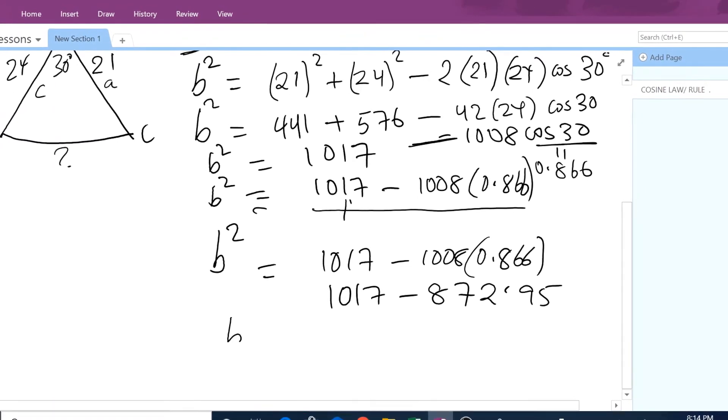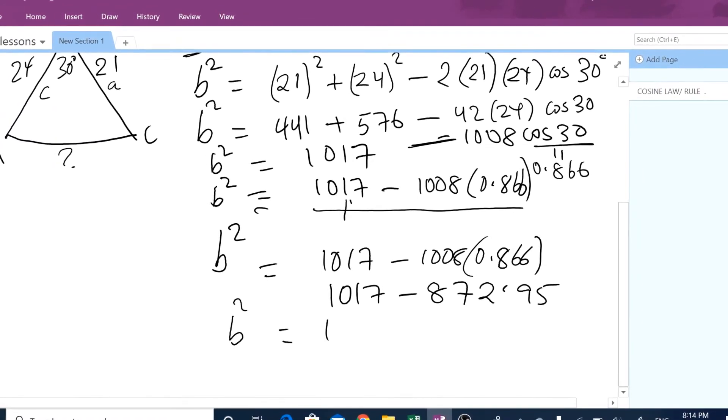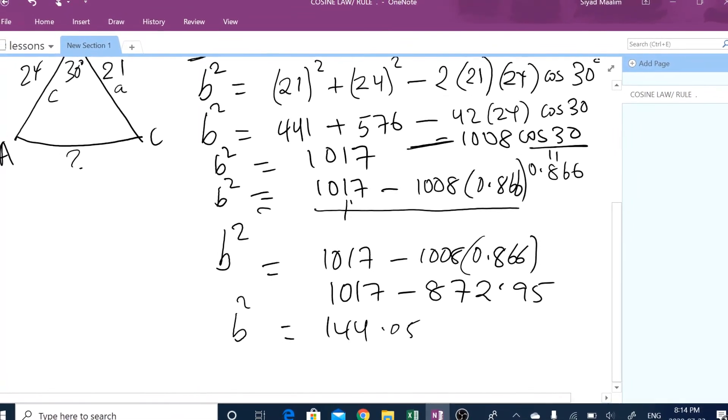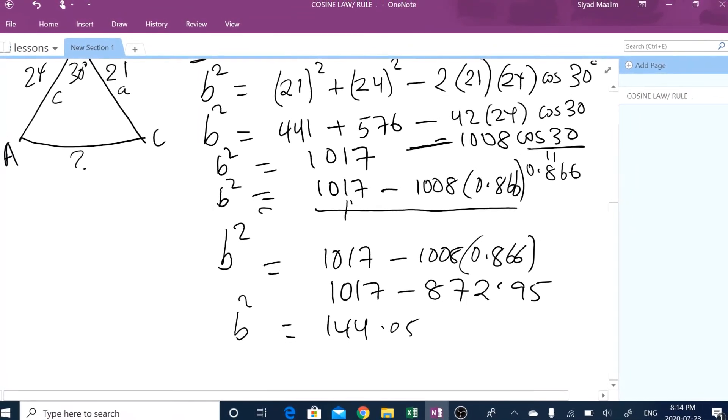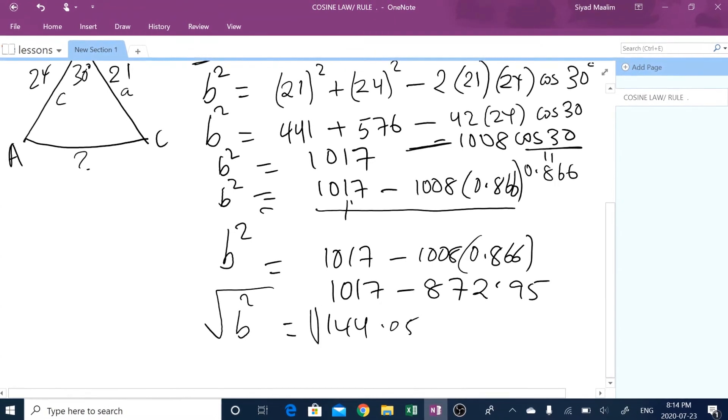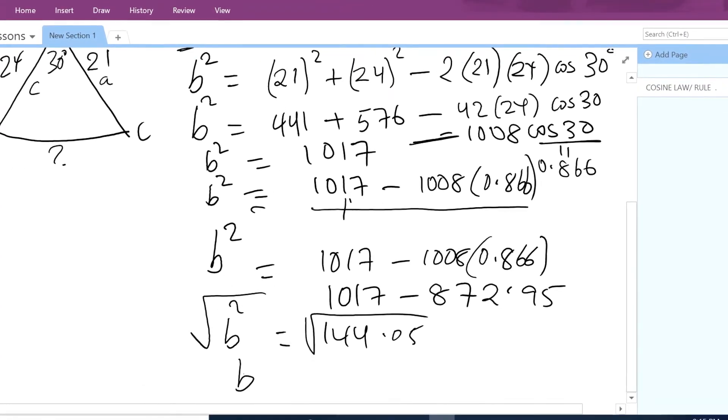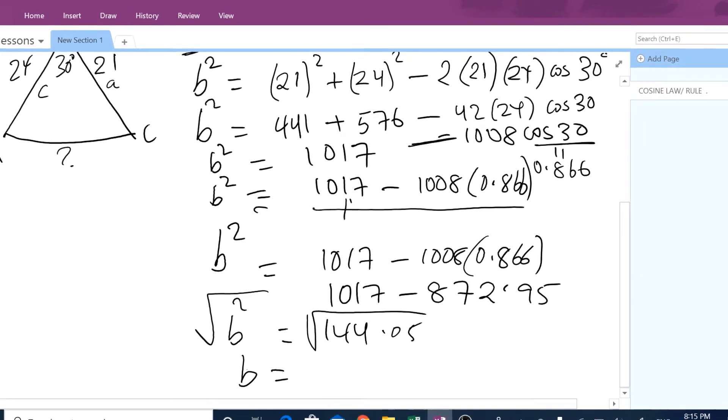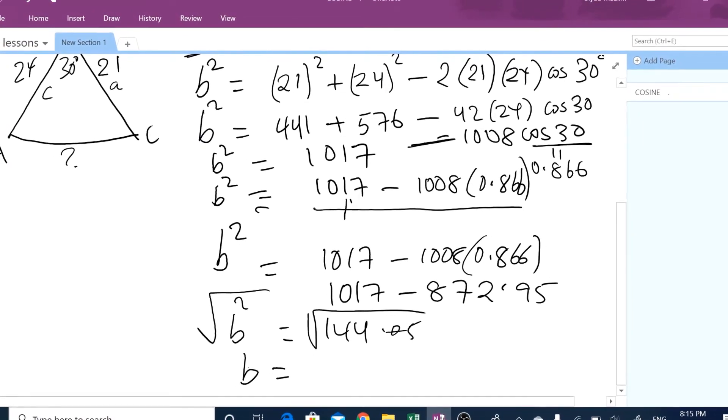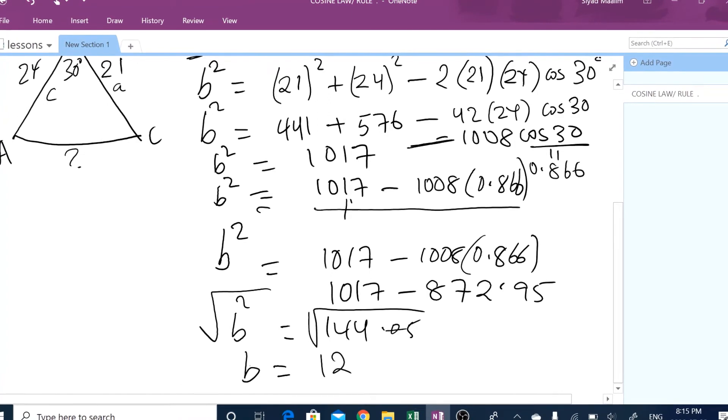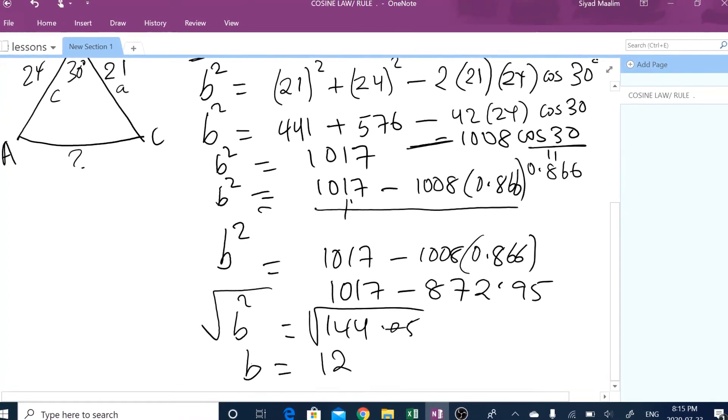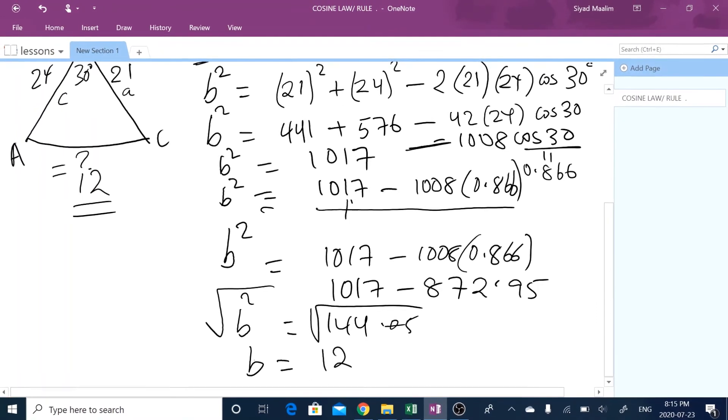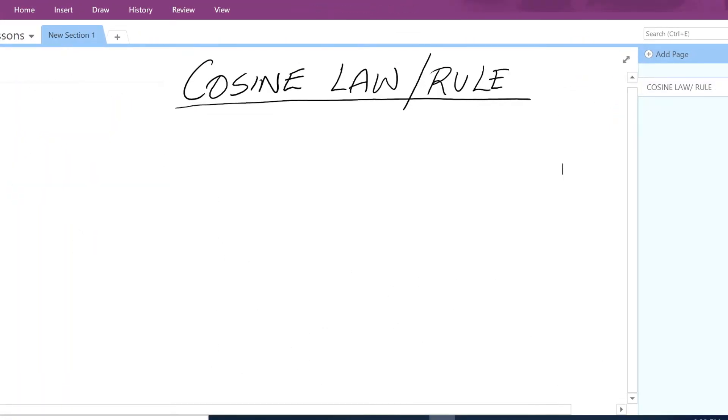So b squared equals 144.05. But in order to find just b, we square root both sides. So b alone equals, what is the square root of 144.05? If you just ignore that, 144 square root is just 12. So the value of b is 12. Let me show you another example where you have to use cosine rule.